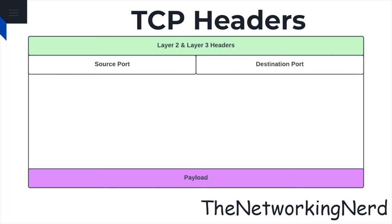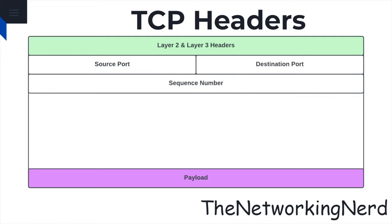The destination port identifies the port number of the receiving application or process, and this helps the receiving host determine which application or service should receive the TCP segment. The sequence number identifies the byte number of the first data byte in the TCP segment, and this allows the receiving host to reconstruct the data stream in the correct order.